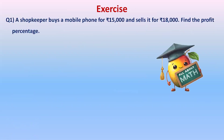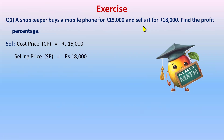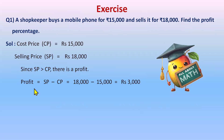Let's do an exercise. A shopkeeper buys a mobile phone for 15,000 rupees and sells it for 18,000 rupees — find the profit percentage. Buying means cost price, so cost price is 15,000 rupees. Selling means selling price, so selling price is 18,000 rupees. Since selling price is greater than cost price, there is profit. Profit = SP minus CP = 18,000 minus 15,000 = 3,000 rupees.